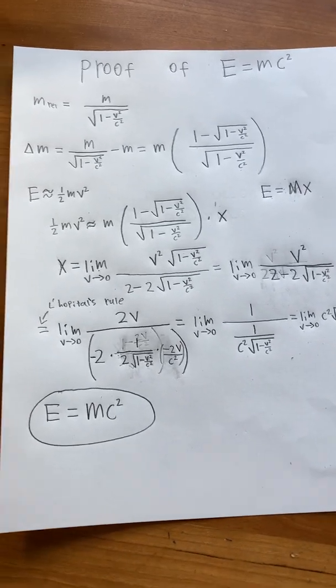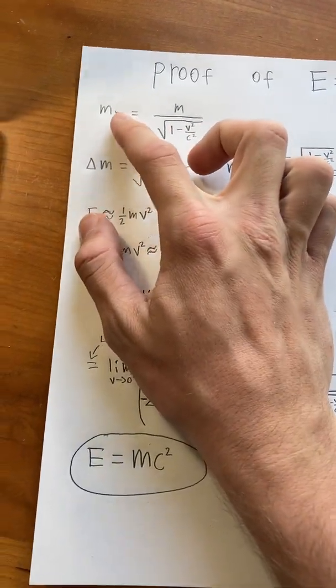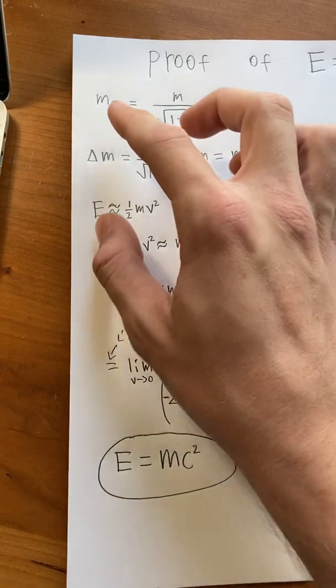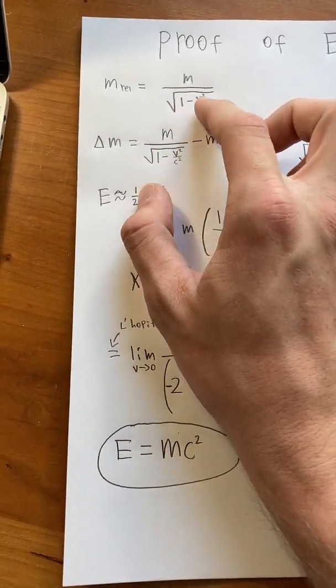So first of all, we will start with this equation, which is a relativistic equation that says the relativistic mass, which means the mass now that it is moving, is equal to m divided by the square root of 1 minus v squared over c squared.